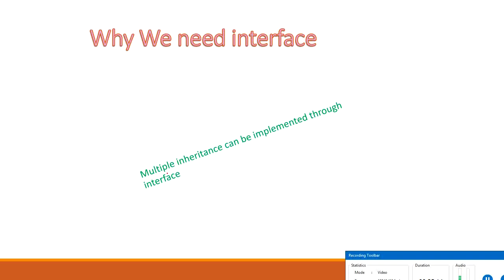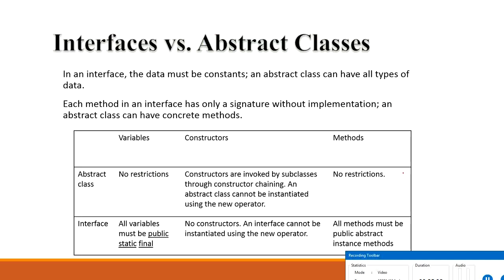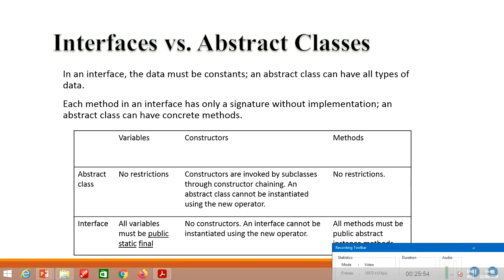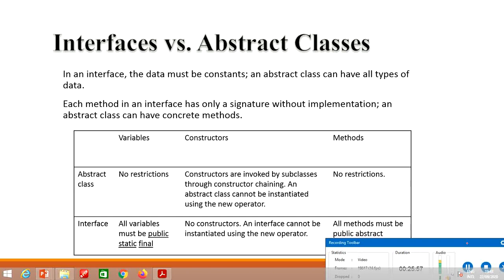Why do we need interfaces? Because multiple inheritance can be implemented through interfaces — a class can implement more than one interface. Multiple inheritance in Java is possible through interfaces but not through classes. Both abstract classes and interfaces contain abstract methods, so what is the difference and when should we choose one over the other?